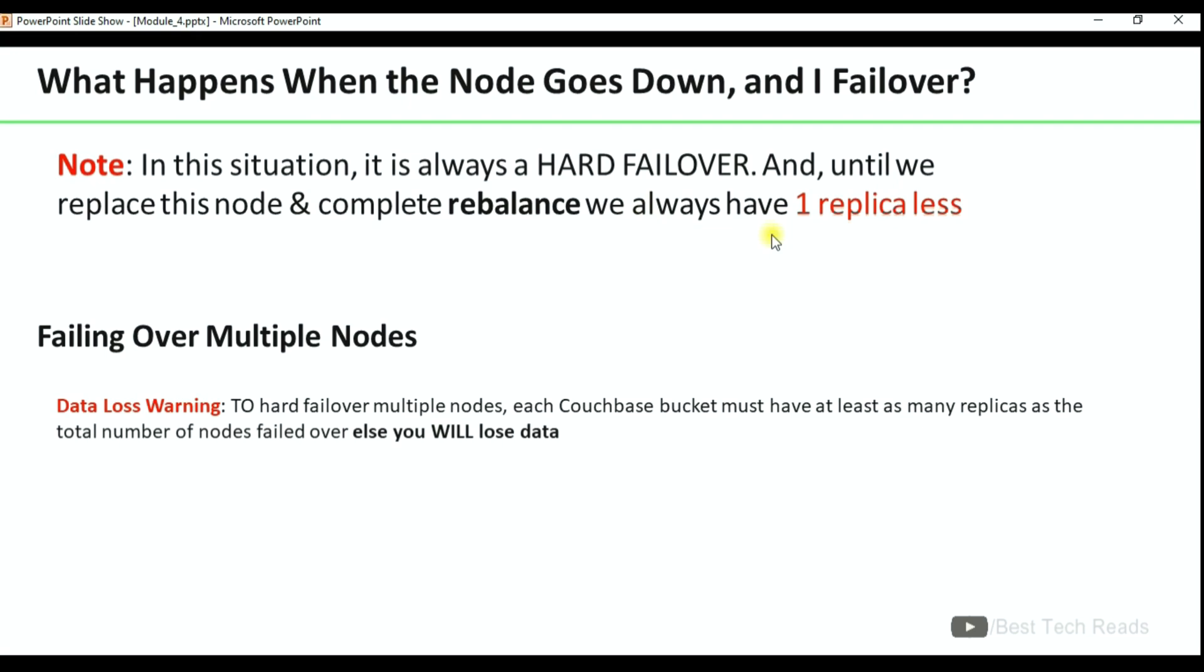So when a node is failed over, no manual intervention is immediately required, but however a rebalance is recommended as early as possible. Because if you ignore this node failure until you do this rebalance, assume one more node got failed over, then there is a data loss in case if you have only one replica set for the buckets.